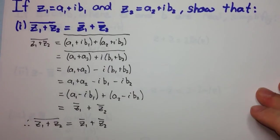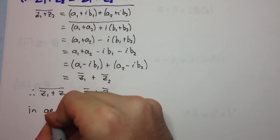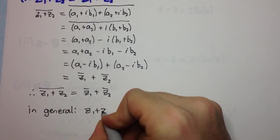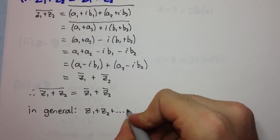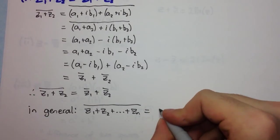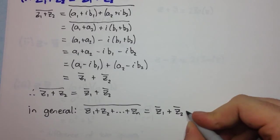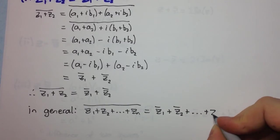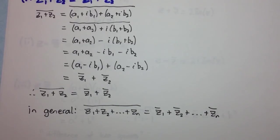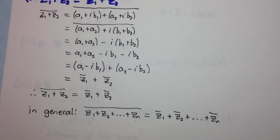In fact we can generalize this statement. In general, if we take the conjugate of a sum of n complex numbers, that is equal to the sum of their individual conjugates. You can prove this quite easily by mathematical induction, and I suggest you try that as well.